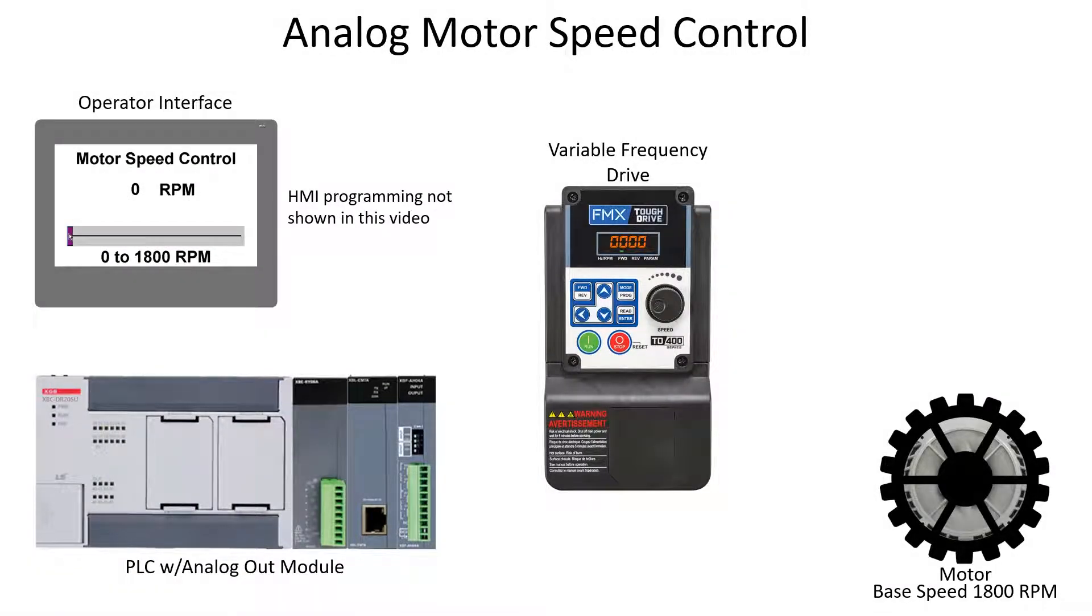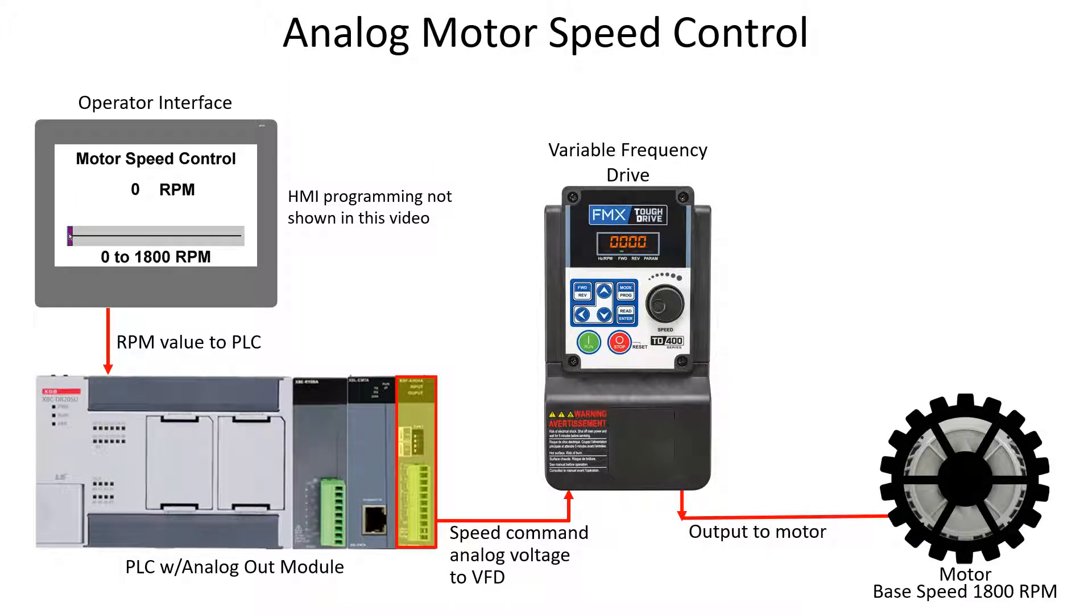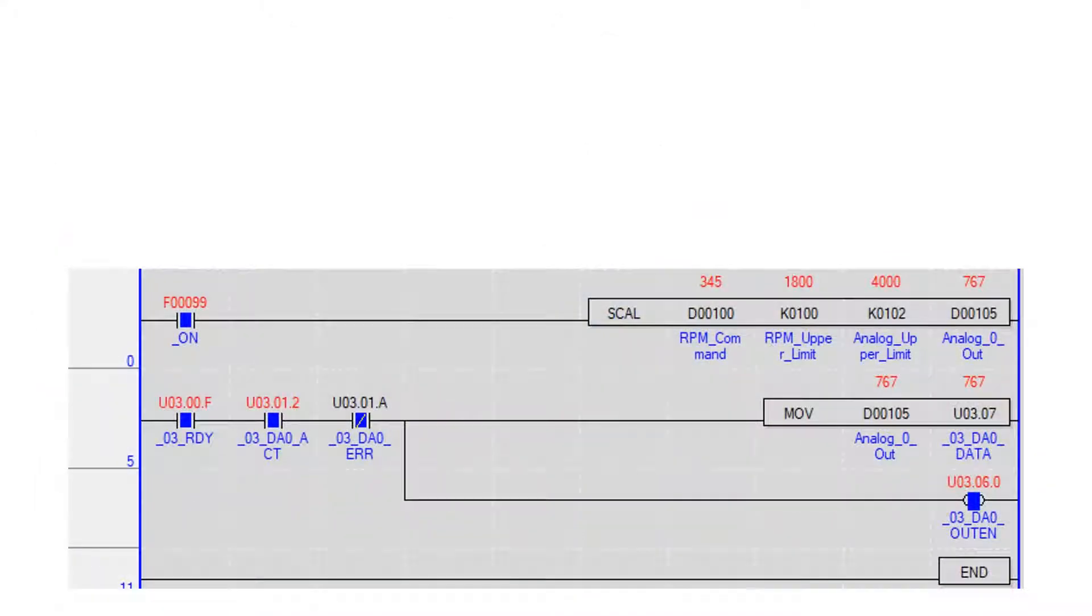The system shown uses an operator interface to input motor speed to the PLC. The PLC is configured with an analog output module. The analog output is connected to the analog input on the variable frequency drive. The VFD is configured for an RPM range of 0 to the base speed of the motor. In this example, 1800 RPM is the base motor speed. We will now build a program in the PLC to scale and output analog voltage to the VFD.